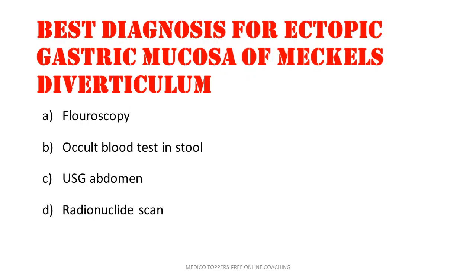Diagnosis for ectopic gastric mucosa of Meckel's diverticulum — how can we detect it? Options: fluoroscopy, occult blood test in stool, USG abdomen, and radionuclide scan. The answer is radionuclide scan.